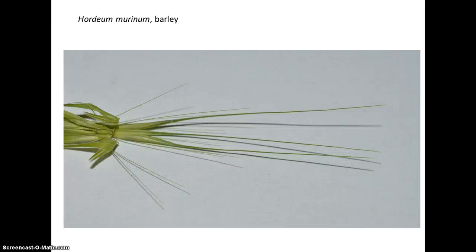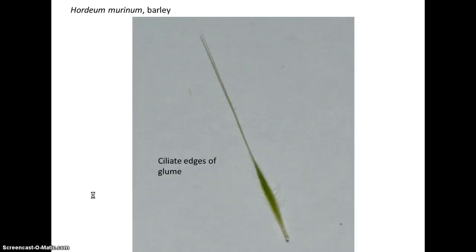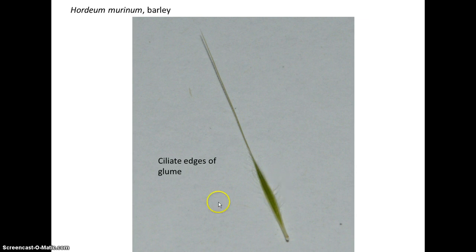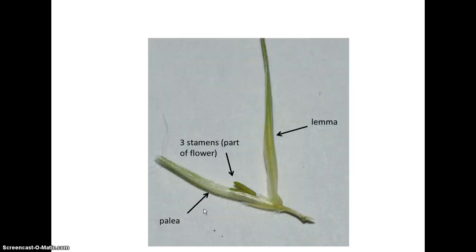This is just another view showing the three spikelets that attach at the node. Here's one of the glumes from the barley — notice it's not completely awn-like; there's a little flat portion and there are often cilia or hairs off of the edges. If you open up the floret, there's the lemma, there's the palea, and we can see some of the stamens that are part of the flower.